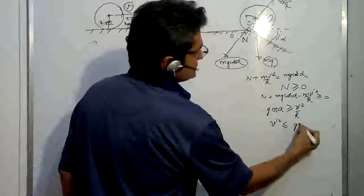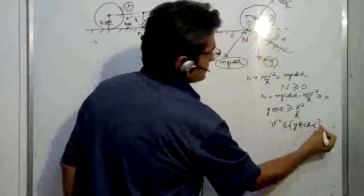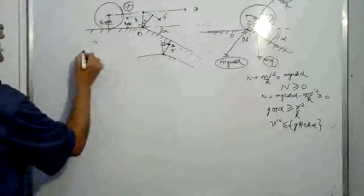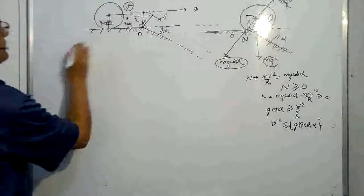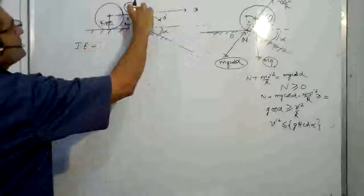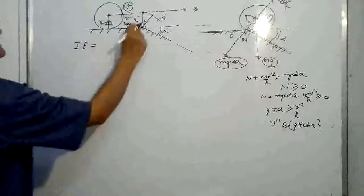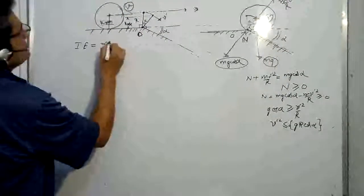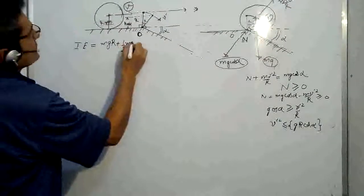This gives g·cos(alpha) ≥ V_dash²/R, or V_dash² ≤ gR·cos(alpha). This is one part. Now there has to be a relationship between V_dash and V, which we get by equating total initial energy to final energy. The reference point is the rolling point O, and with this reference the initial potential energy is MgR.